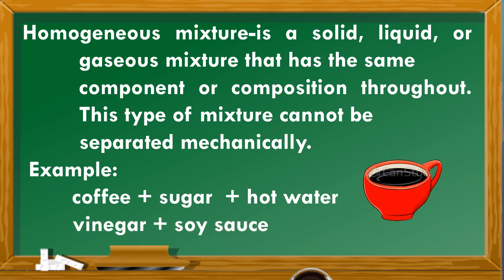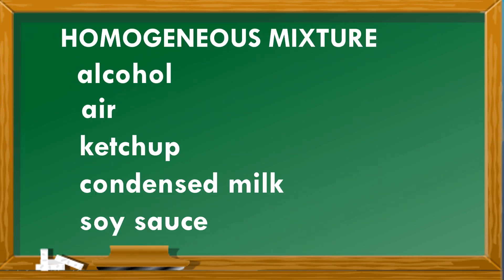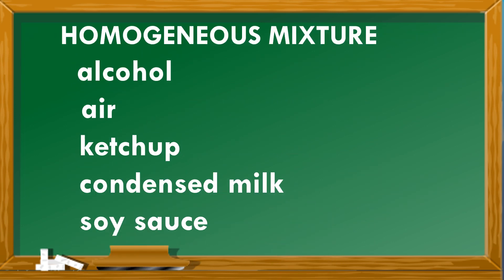Another example is vinegar plus soy sauce. Other examples of homogeneous mixtures are alcohol, air, ketchup, condensed milk, and soy sauce.